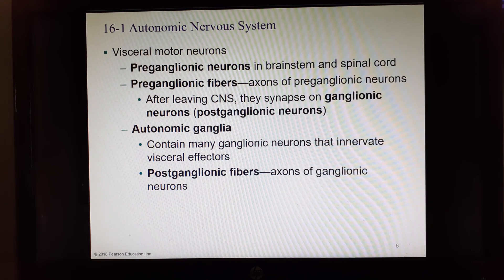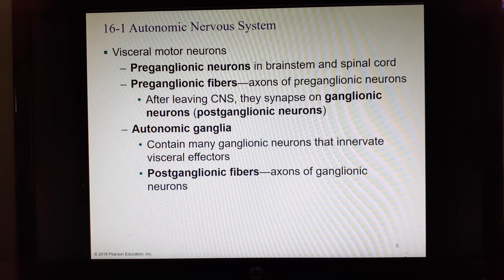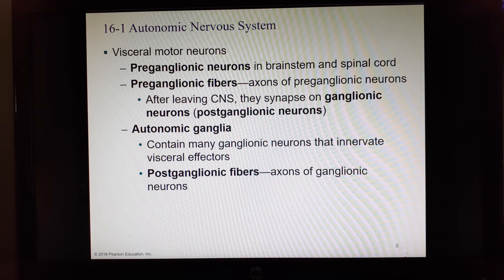Since we're talking about having several neurons, we need a way to name them. One neuron starts in the brainstem or spinal cord and goes out to the ganglion — since it happens before the ganglion, we call it the preganglionic neuron, and its axon is called the preganglionic fiber. Then we get to the autonomic ganglia, where the second neuron has its cell body. Its axon leaves and that neuron is called the postganglionic neuron, and its axon is called the postganglionic fiber.